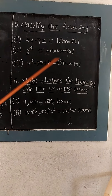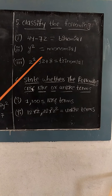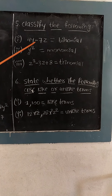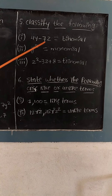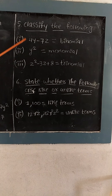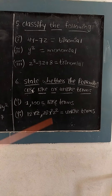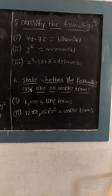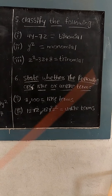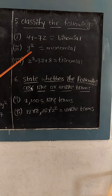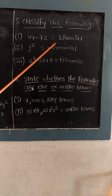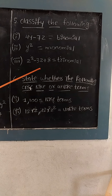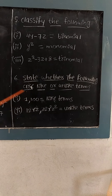The fifth question: classify the following as monomial, binomial, or trinomial. First: 4y minus 7z. This expression is made up of two terms — 4y and minus 7z — so it is a binomial. Second: y squared. Here we have only one term, so it is a monomial. Third: z squared minus 3z plus 8. This expression is made up of three terms, so we call it a trinomial.